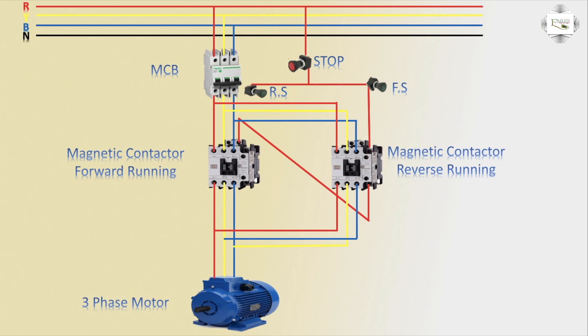Second magnetic contact NC outlet connects to the first magnetic contact coil A2 — coil connection complete. Same process: first magnetic contact NC outlet connects to second magnetic contact coil A2.